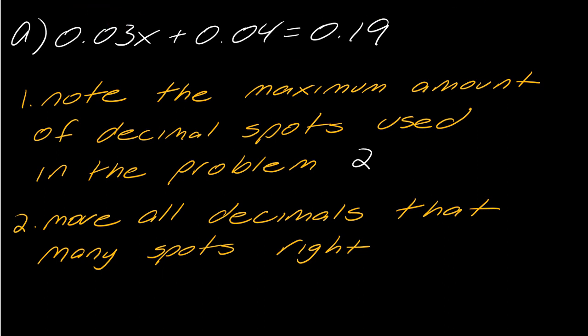Now the next thing would be to move all decimals that many spots to the right. So in this case, here's my decimal right here, so I need to move it one, two spots. Moving on to this one, one, two spots. And then this one, one, two spots. So really what we're doing here is we're multiplying by 100. But we can really just think about this as playing with the decimal.